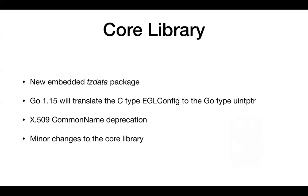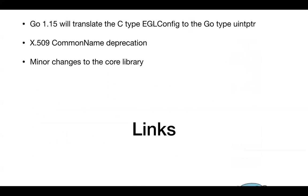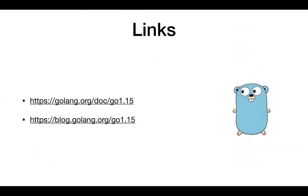Also, we have some new methods in the sync package called Map LoadAndDelete. It automatically deletes a key and returns the previous value if present. Also, Map Delete is more efficient now. There are many other small changes in the core library described at the provided link — you can follow it and find anything specific if you want.